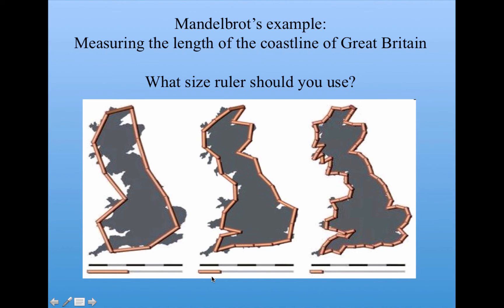Here we shrink the ruler by half, and if you count up the segments, you get 28 — which is more than 2 times 12. So the actual length we get with the smaller ruler is longer than the length we get with the larger one. The reason for that is these smaller rulers can fit a little bit better into the nooks and crannies we see on the coastline. If we look at an even smaller ruler — cutting this one in half again — you can see that it fits even better into more nooks and crannies, and will give us an even longer coastline measurement.